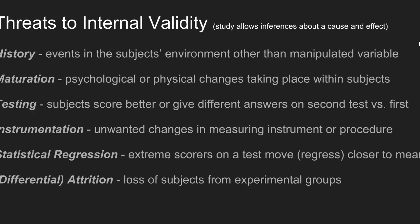There are several threats to internal validity that can occur in experimental designs. These include history, maturation, testing, instrumentation, statistical regression, and differential attrition.